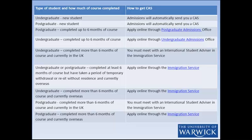If you are an undergraduate student and have completed more than six months of your course and you are currently in the UK, you will need to arrange a meeting with an international student advisor in the international office, who will need to check all your documents before a CAS can be issued. To make an appointment, please contact the immigration service. Video number 12 provides these details.